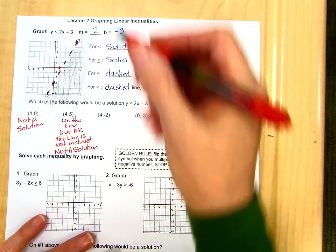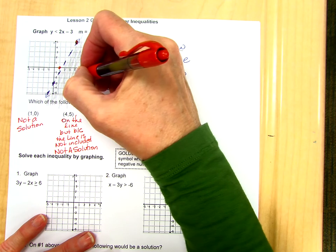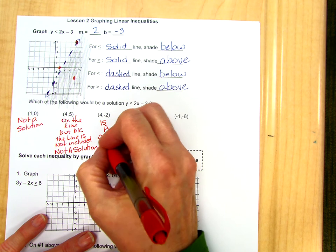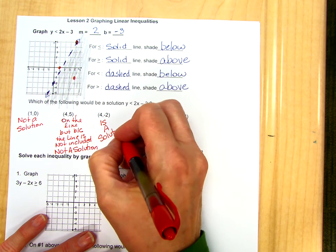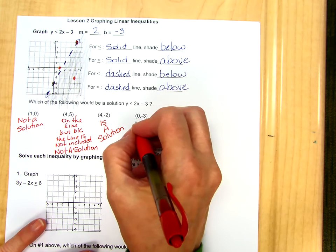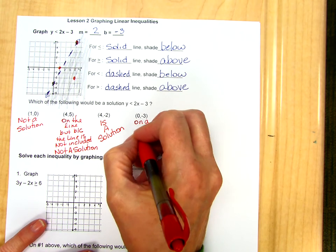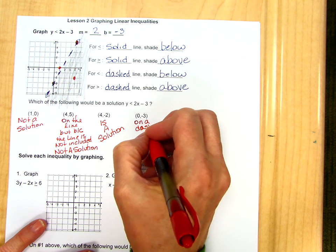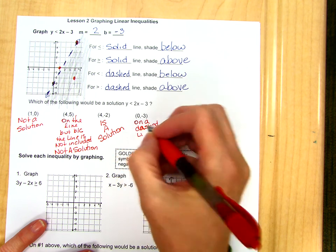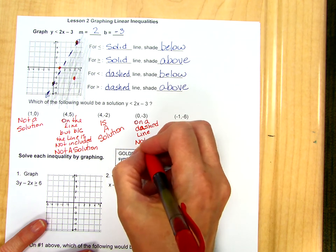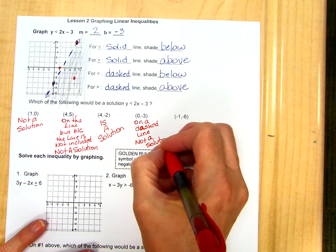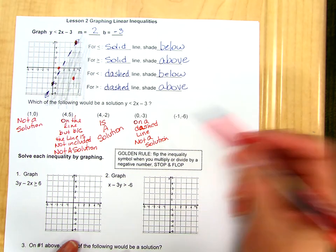So then we go to 4, negative 2. Go over 4, down 2. This one is a solution because it is in the shaded region. 0, negative 3. This is another case where it is on a dashed line, so it is not a solution. If it were a solid line it would be, but this case is a dashed line, so it is not a solution.